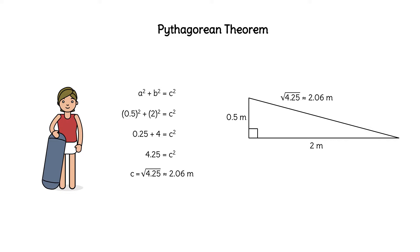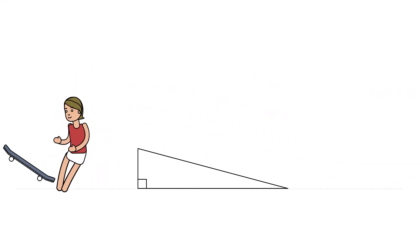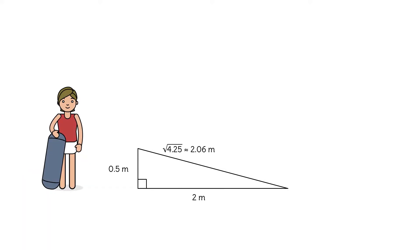Rosalina cuts the plywood and completes her ramp. She tries a trick, but the ramp isn't high enough. So Rosalina takes apart the ramp and extends the height to 1 meter. She wants to use the same plywood for the hypotenuse, so the hypotenuse is still √4.25. She needs to adjust the horizontal length of the ramp so that the plywood fits. What should this horizontal length be?